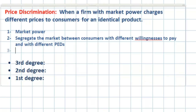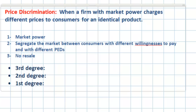Third, price discrimination requires that buyers of a particular good are not able to resell that good to other buyers who would otherwise have to pay a higher price. A classic example is when a person books an airline ticket at a lower rate than somebody else booked that same ticket on the same flight. Airlines prevent resale by requiring you to hold a passport with the same name as the ticket you carry to the gate. If you could resell a cheaper ticket, this would prevent the airline from charging different prices to different consumers.